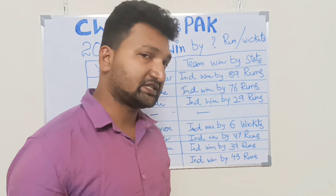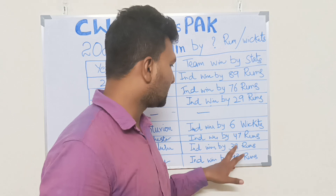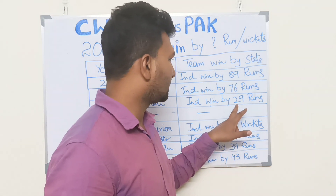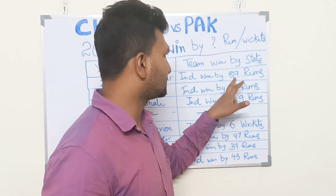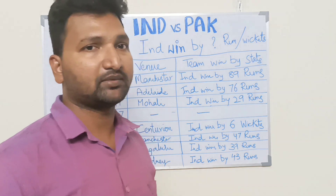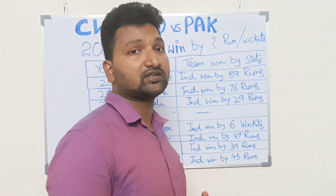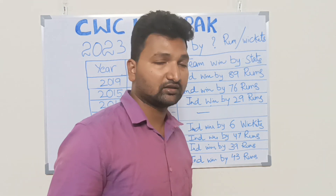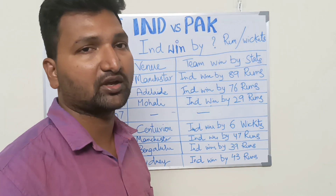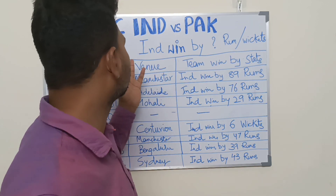In 2019 Manchester, India won by 89 runs. The stats show: 43 runs, 39 runs, 47 runs, 29 runs, 76 runs, 89 runs — and the latest match shows 200-plus runs. The winning margins are increasing, showing India's stats and performance improving a lot when it comes to Pakistan matches.